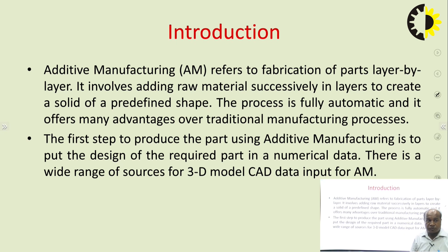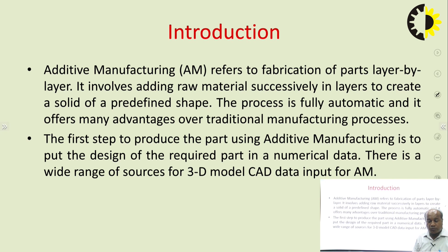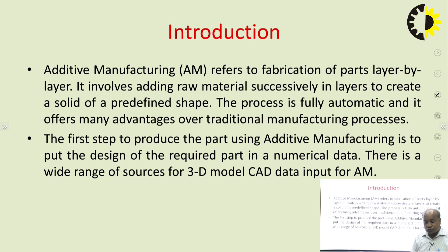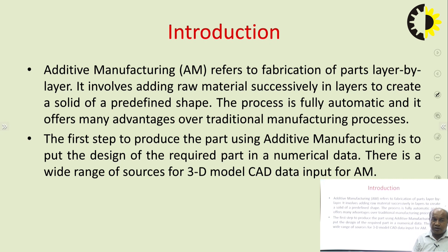The first step to produce a part using additive manufacturing is to put the design of the required part into numerical data. There is a wide range of sources for 3D model CAD data input for additive manufacturing. For preparing a CAD file we need 3D software. We are well aware of 3D CAD software like IDEA, ProE, CATIA, AutoCAD, and different open source software also available to create 3D models. The 3D model basically works as a raw material for the manufacturing purpose. There is no machining operation required; we can directly create a part using this 3D model.